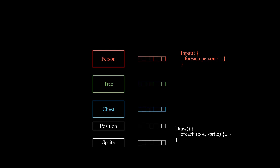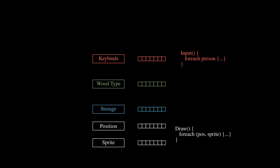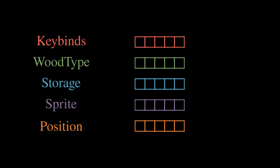Now that we've pulled our position and sprite components out of the three objects, we don't really have game objects anymore. Rather, we have some spare parts that represented part of a person, or part of a tree, or part of a chest. We can call these components as well, and just like our position and sprite components, store these into their own arrays. So now we have multiple arrays of components and we are able to loop over these at our own discretion.